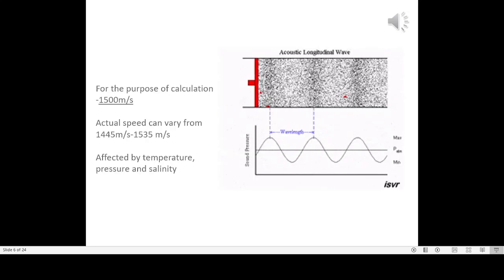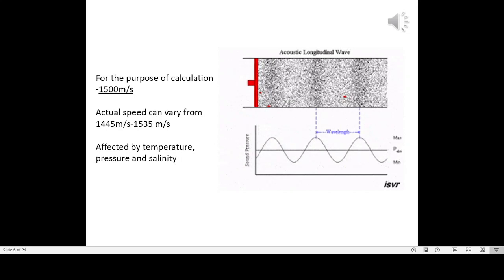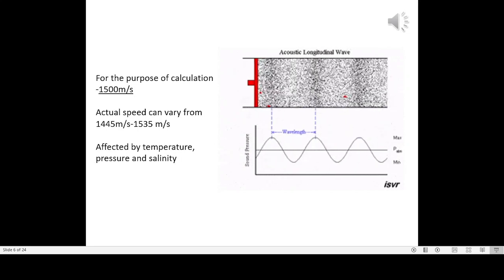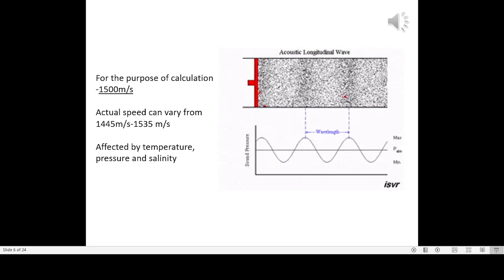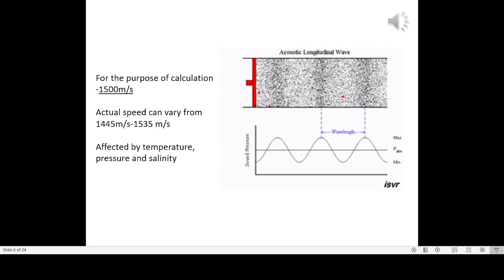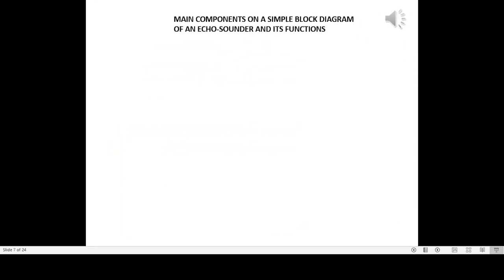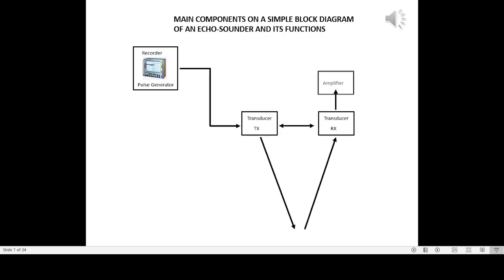For the purpose of calculation, 1,500 m/s is used. Actual speed can vary from 1,445 m/s to 1,535 m/s, affected by temperature, pressure, and salinity. The main components of the echo sounder are: recorder, pulse generator, transducer TX, transducer RX, and amplifier.